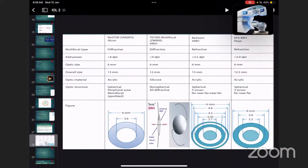Examples: first is ReSTOR SA60D3 by Alcon, diffractive type, aspherical with acrylic material. Second is Tecnis multifocal AMO, diffractive lens with silicon material, non-spherical in structure. Then ReZoom AMO, refractive with acrylic material lens, spherical with five zones. And SFX MF1 Hoya lens, refractive, spherical in structure with acrylic material.